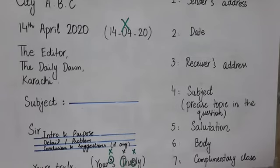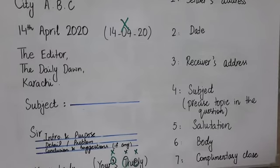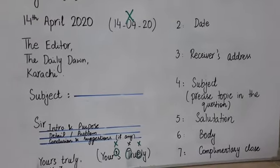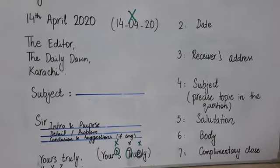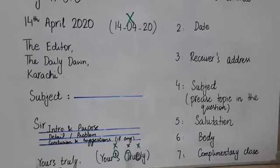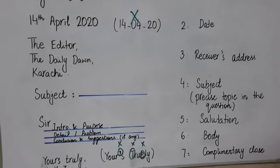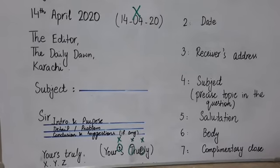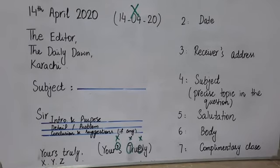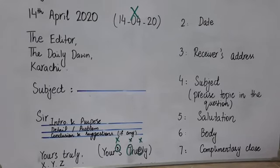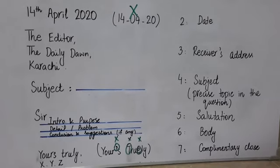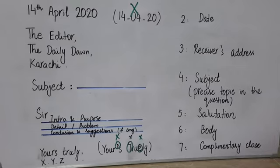The fifth part is the salutation, where you write 'Sir' or 'Madam.' The sixth part is the body of the letter — the main part — which comprises three paragraphs, though you can also write four to five. In the first paragraph you give the introduction and the purpose of writing the letter. In the second paragraph you give the detail or the problem. In the third paragraph, the concluding paragraph, you give the conclusion and suggestions if any.